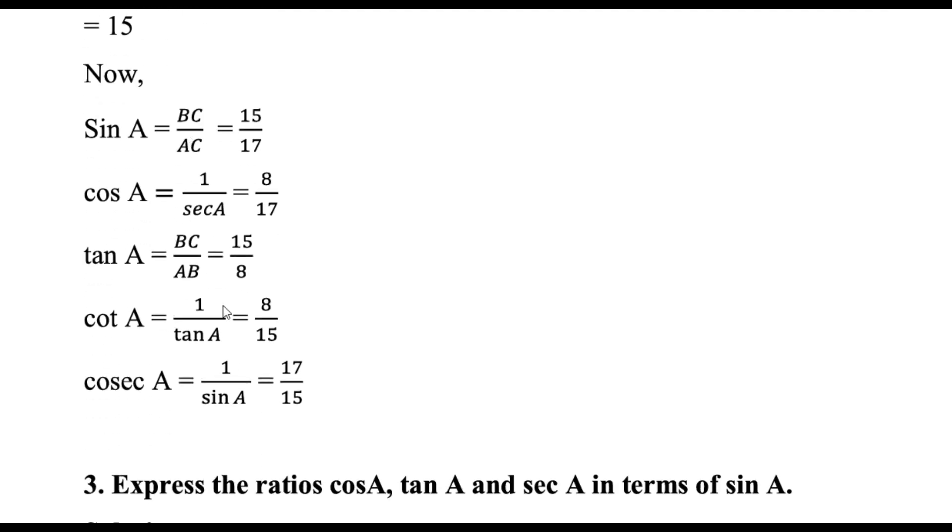Now calculate all the trigonometric ratios. Sin A will be BC by AC, 15 by 17. Cos A will be 1 by sec A, that is 8 by 17. Tan A is BC by AB, which comes to 15 by 8.